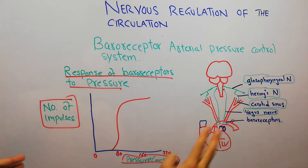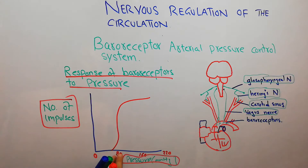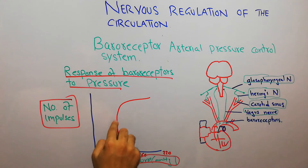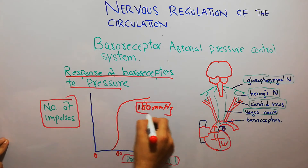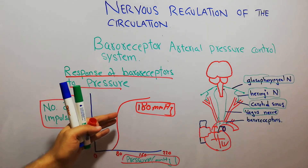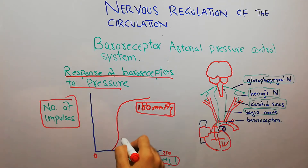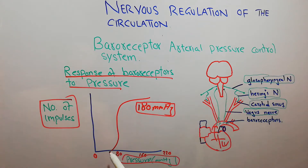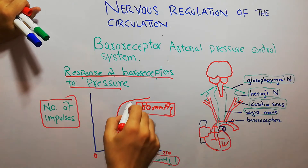When pressure starts increasing beyond 80 mmHg, the number of impulses carried from the baroreceptors and carotid sinus toward the brain increases very rapidly. These impulses reach a maximum limit at around 180 mmHg. When arterial pressure reaches around 180 mmHg, there is almost no further increase in impulses. Initially no impulses are carried to the brain, then when pressure exceeds 80 mmHg, impulses per second transmitted to the brain increase tremendously.